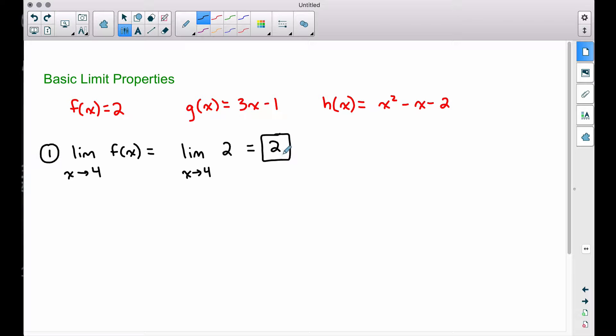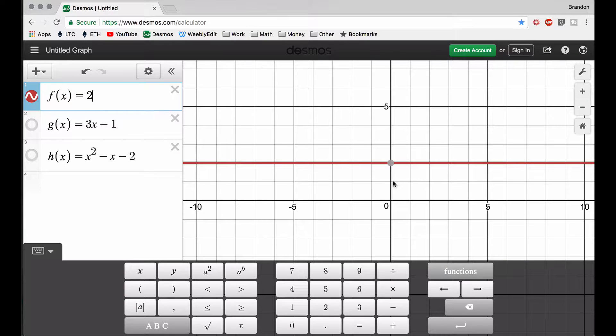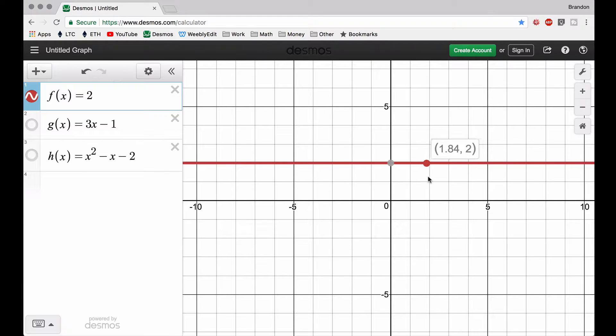This is the y value that we're going to be approaching as x approaches four. Let's look at a graph. So I have f of x equals two over in Desmos, and I'm going to let x approach four. Notice x is getting close to four, but notice that y value is never changing, because the limit of a constant function is the constant. So that's why our limit's two, regardless of what we're approaching here. The x value does not matter, the y value remains constant. Hence, the limit of a constant is the constant.